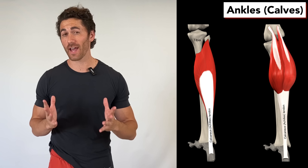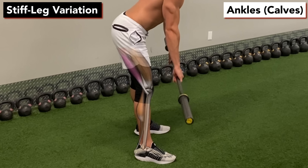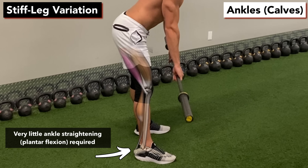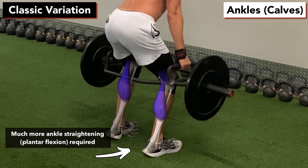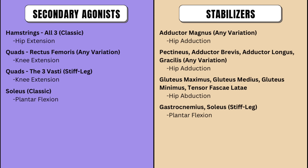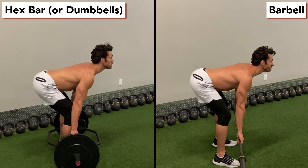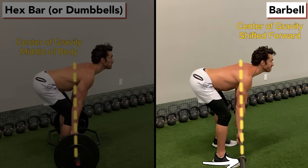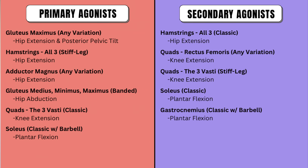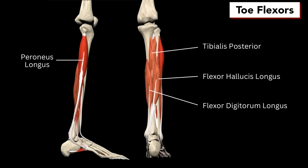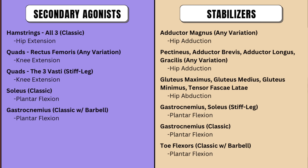So how much does the deadlift work your calves? Well, it depends. With the stiff leg variation, there's not a whole lot of straightening of the ankle required, so both muscles are just stabilizers. With the classic variation, there's much more straightening of the ankle required, so the soleus gets bumped up to a secondary target, while the gastrocnemius is still a stabilizer. However, there's a caveat: if you're using a barbell, that places your center of gravity farther out in front of your body, which shifts more weight onto the balls of your feet and your toes. That would bump the soleus up to a primary target and the gastrocnemius up to a secondary, and it would also activate the toe flexors, making them at least stabilizing muscles. So what equipment you're using also can make a difference on how each of the muscles in the body is worked.